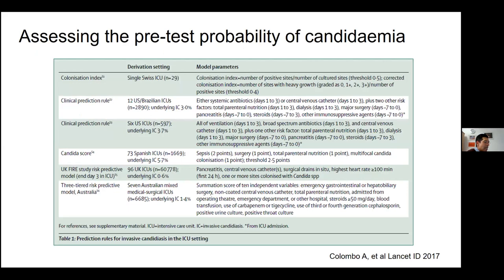This table summarizes some of the risk scores that have been proposed. The colonization index was based on a single ICU study with 29 people — the number of positive sites over the number of cultured sites with a threshold of 0.5. The Candida score, also well known, was derived from 73 Spanish ICUs with 16,000 people, using multivariable logistic regression. In general, these scores have good negative predictive values but poor positive predictive values, and may not perform as well outside the derivation cohorts — a score derived from a Spanish ICU may not apply to a South African high care unit setting.